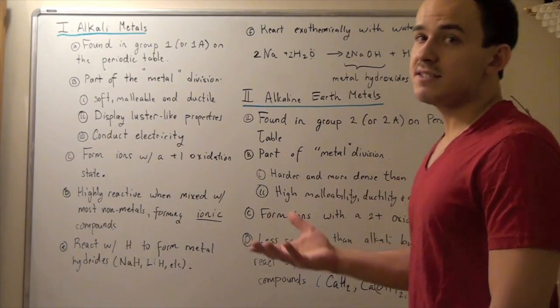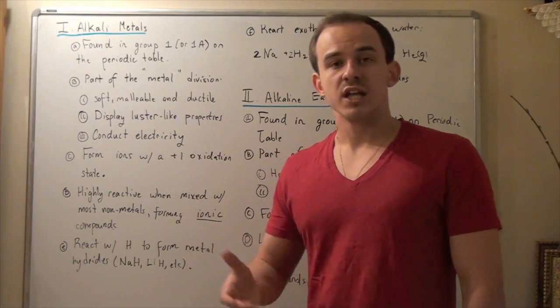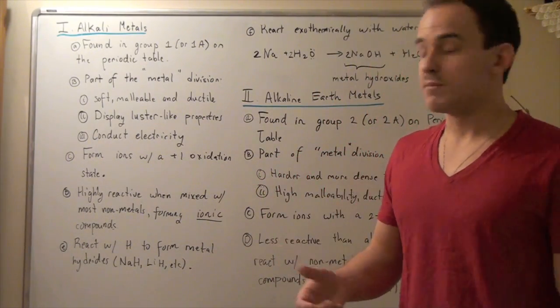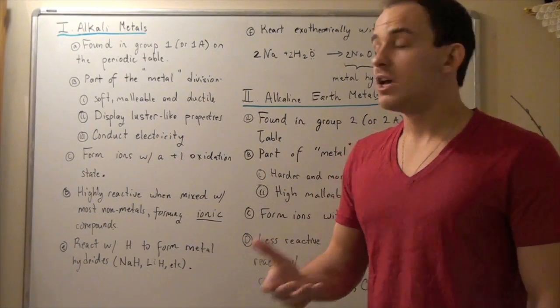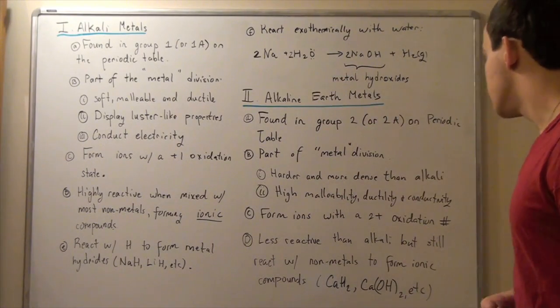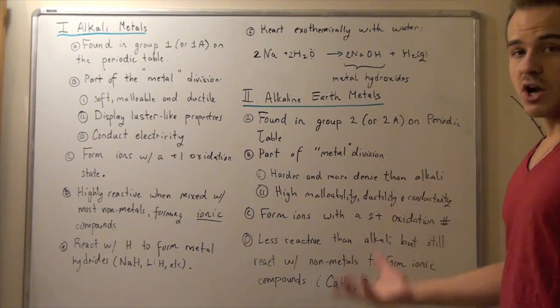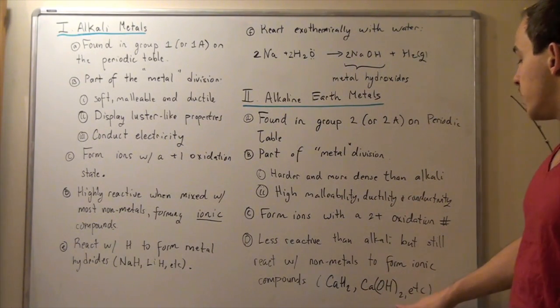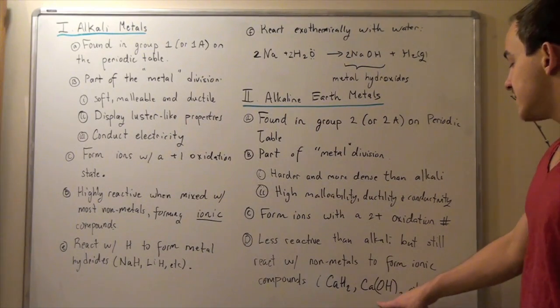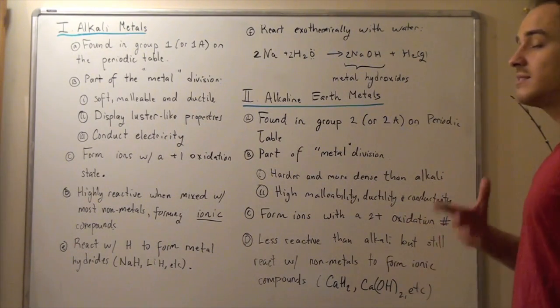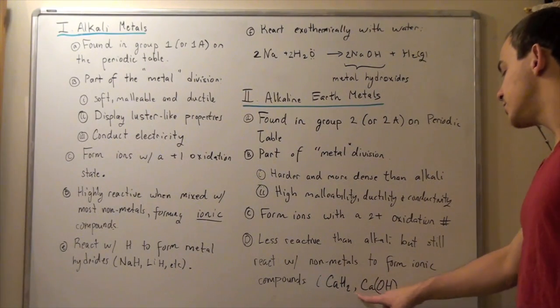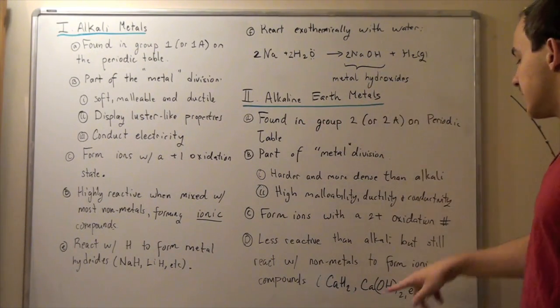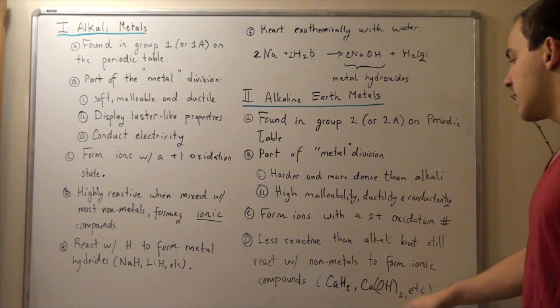For example, calcium reacts with hydrogen to form calcium hydride, CaH2. Calcium also reacts with water to form calcium hydroxide. We have two hydroxides because each hydroxide has an oxidation state of -1. To balance out the +2 oxidation state on calcium, we need two hydroxides.